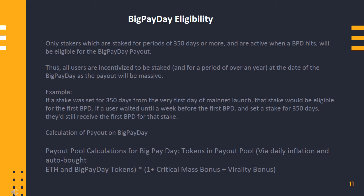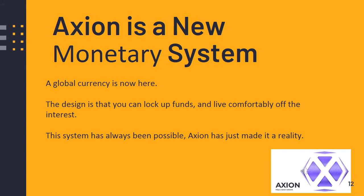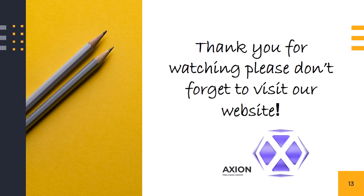Calculation of payout on Big Payday: The payout pool is calculated from tokens via daily inflation and auto-bought ETH, plus Big Payday tokens, multiplied by factors including critical mass bonus and virality bonus. Axion is a new monetary system — a global currency is now here. The design is that you can lock up funds and live comfortably off the interest. This system has always been possible; Axion has just made it a reality. Thank you for watching — please don't forget to visit our website.